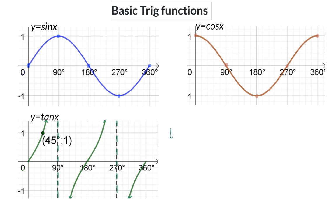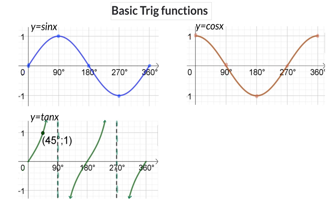The reason for these asymptotes is the identity that tan x equals sin x divided by cos x. If we look at the cos graph, we see that cos of 90 as well as cos of 270 degrees has a value of 0, meaning there is a 0 in the denominator, and that is why we then have asymptotes. In between these two asymptotes, the tan graph has its normal curve.